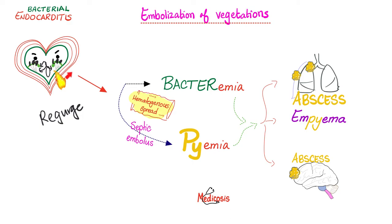Since these are infected foci, they can spread, leading to bacteremia and/or pyemia. Pyemia is not pus in the blood — there is no such thing as pus floating in the blood. It is a septic focus or septic embolus floating in the blood. Once the septic embolus hits another organ, it will create an abscess there. I can develop lung abscess, empyema, brain abscess, and vertebral osteomyelitis — just like Pott's disease of tuberculosis.